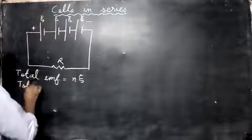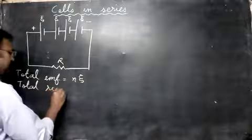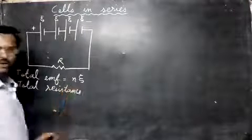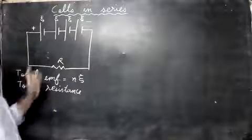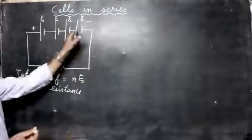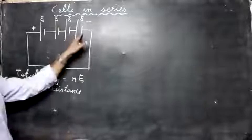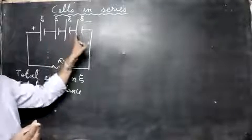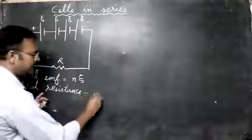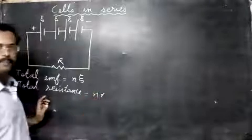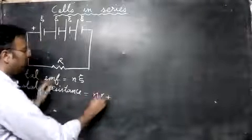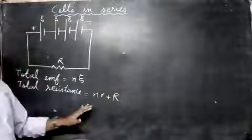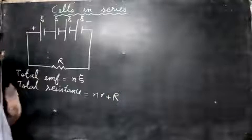Now let's find the total resistance. Each cell has an internal resistance, small r. Since there are n cells, the total internal resistance is n times r. Adding the external resistance, capital R, the total resistance is n·r plus R.